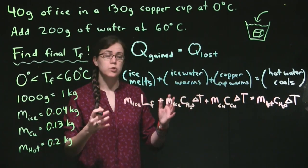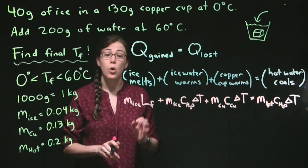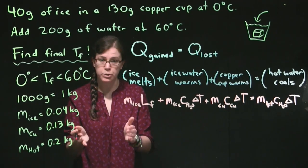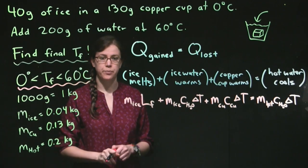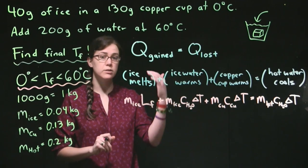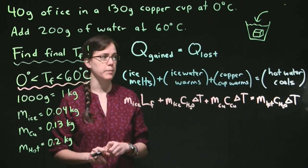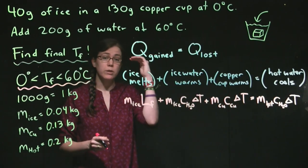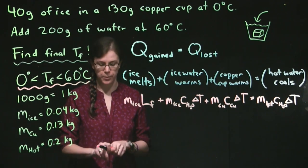However, the way that we set this up, since we're looking at the amounts of heat, each time that we specify what delta T is, we have to make that delta T a positive number. Which means we need to take the big temperature minus the small temperature. What that means is where the ice water is warming up, T_final minus zero will be what we put for delta T. Over here, T_final minus zero for the copper cup warming up. But then really important for the hot water, the hot water started at a bigger number, 60 degrees Celsius, and will be cooling down. And so we'll have 60 minus T_final.